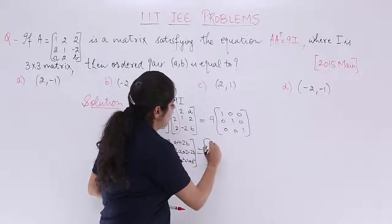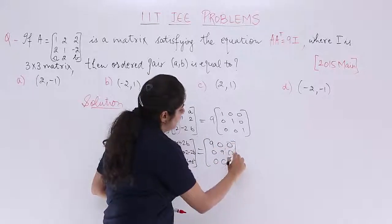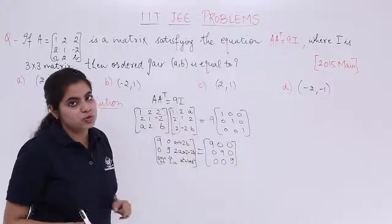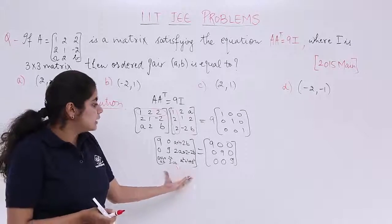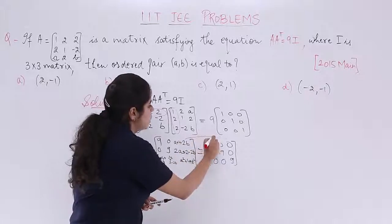2 times 2 is 4 and it is plus B square. Is equal to, multiply everything: 9, 0, 0; 0, 9, 0; 0, 0, 9. You see, we have something now. What are we supposed to find? We are supposed to find the ordered pair AB. We have certain elements here, certain elements here. Let's equate them. Equating them gives me certain equations.